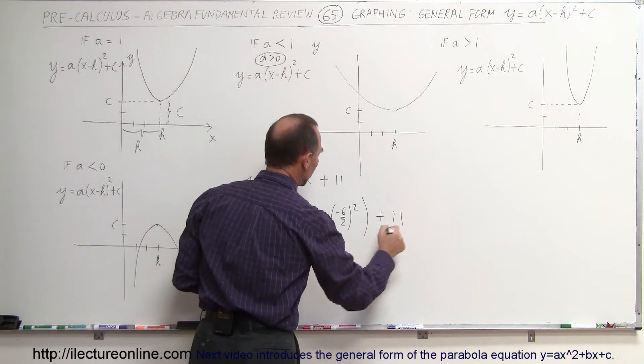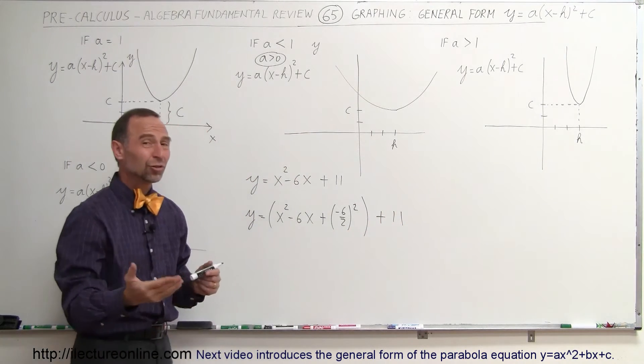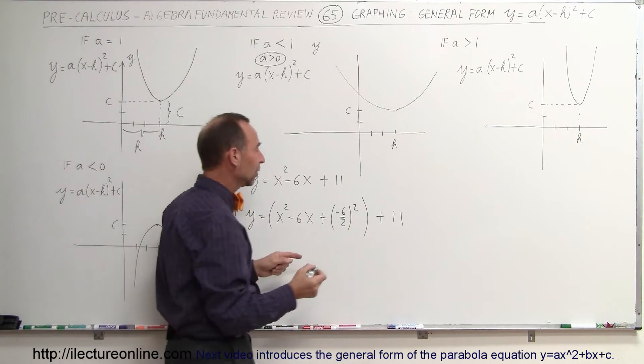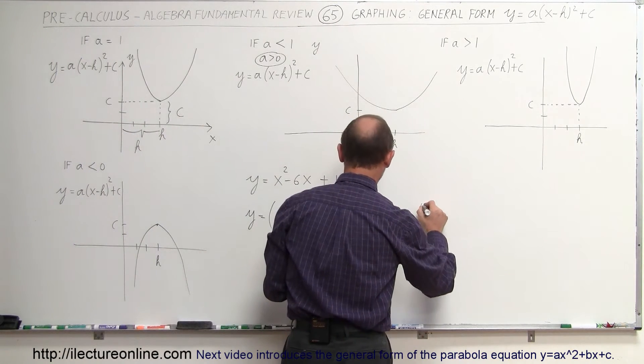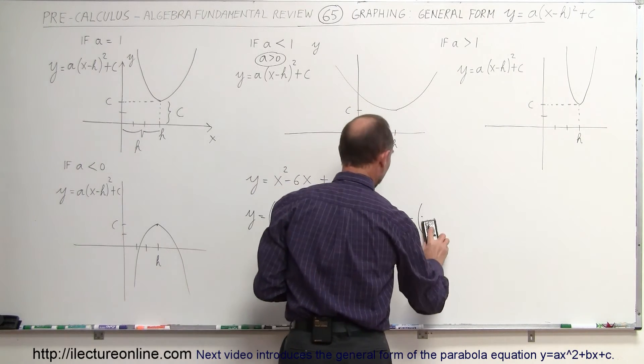And then we still have the plus 11. But notice, if we're going to add this quantity on the right side, we should subtract that quantity from the right side as well so we don't change the equation. So we're going to write minus (6 over 2). Just a moment, there's a negative in there, can't forget that.